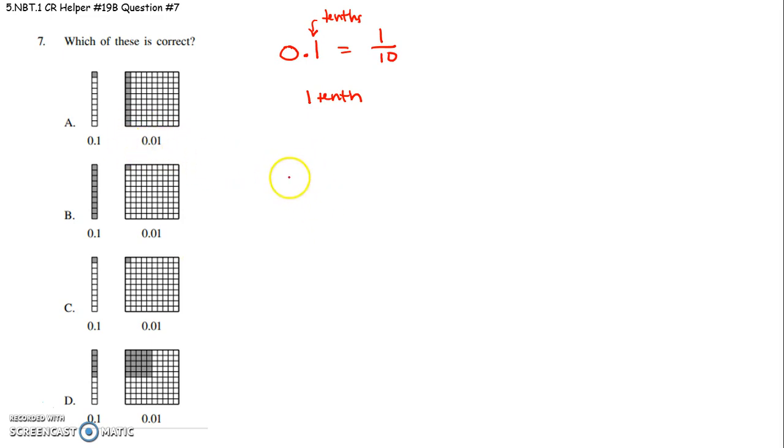Now let's look at the other number that they give us, 0.01. Well this right here is the tenths place. This right here is the hundredths place. So this is 1 one hundredth.